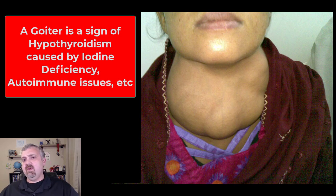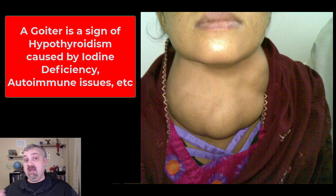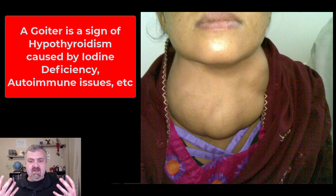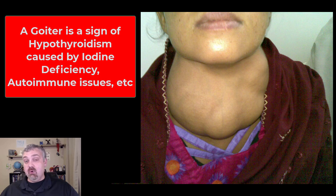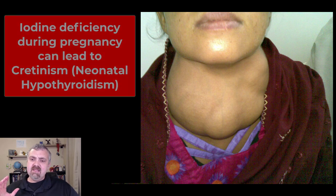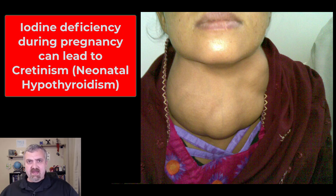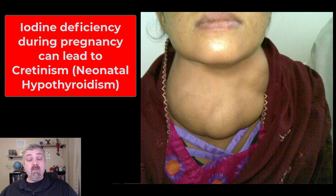A goiter occurs when someone has hypothyroidism — you'd see an enlargement of the thyroid gland. The thyroid is trying to make thyroid hormone, but in most cases, at least in the developing world, it's because of an iodine deficiency. The follicles are producing more colloid and thyroglobulin, but without iodine they can't actually make thyroid hormone, so the thyroid gland just starts to swell and get bigger. That's the most common cause of hypothyroidism worldwide. It's especially important to get enough iodine when pregnant, because neonatal hypothyroidism — cretinism — leads to short stature and mental developmental issues, and is the leading cause of mental developmental issues in the world.